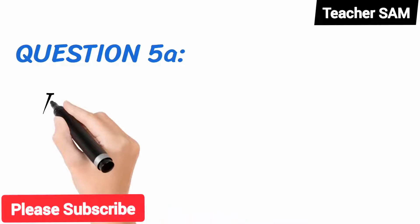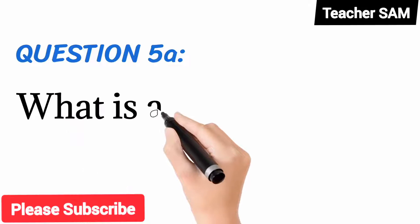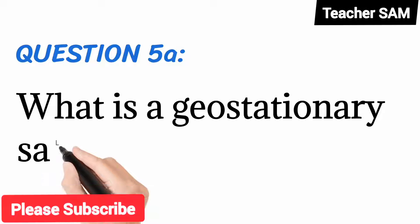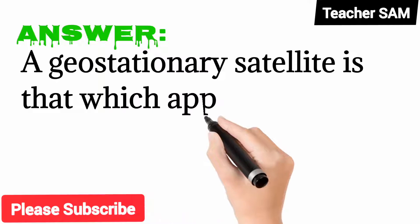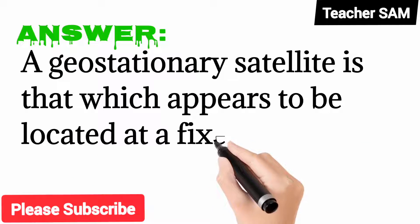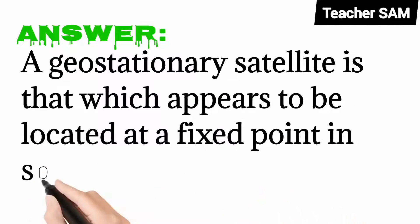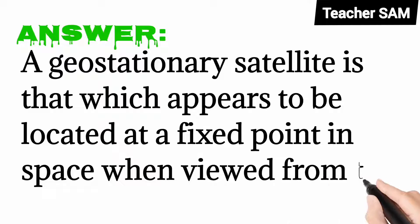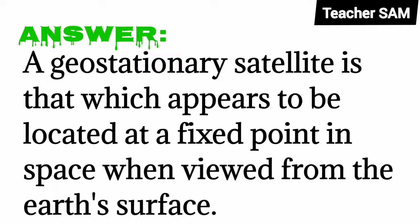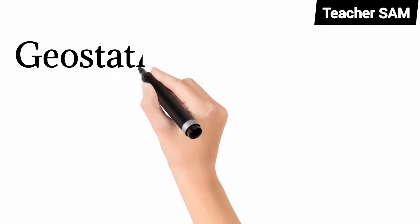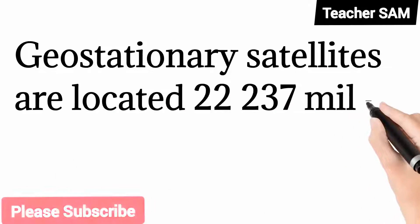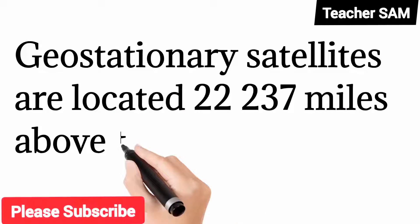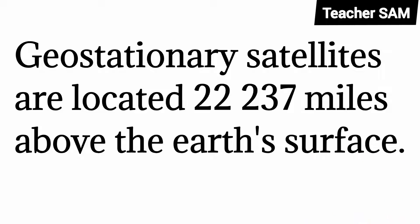Question 5a: What is a geostationary satellite? Answer: A geostationary satellite is one which appears to be located at a fixed point in space when viewed from the Earth's surface. Geostationary satellites are located 22,237 miles above the Earth's surface.